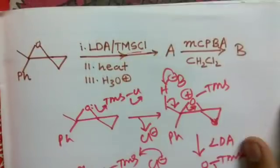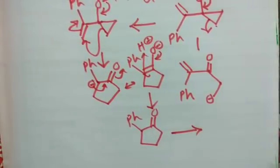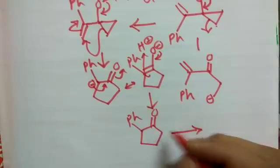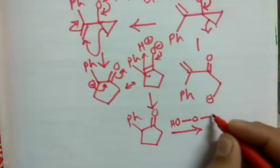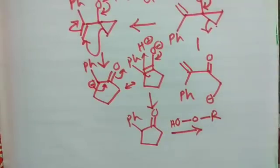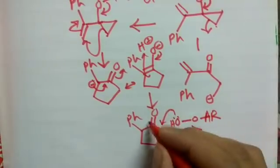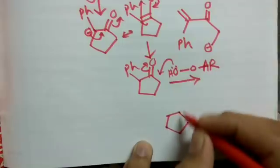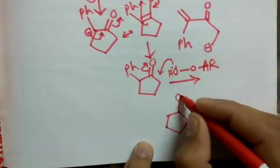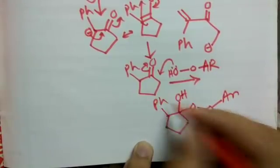Second condition is treatment with meta-chloroperbenzoic acid, and we can guess it is a Baeyer-Villiger oxidation. I just write the R group, the carbonyl group, and aromatic group as Ar. Now this will attack here, so we will have the intermediate like this: here we have OH, here we have O-O-Ar, and here we have phenyl.